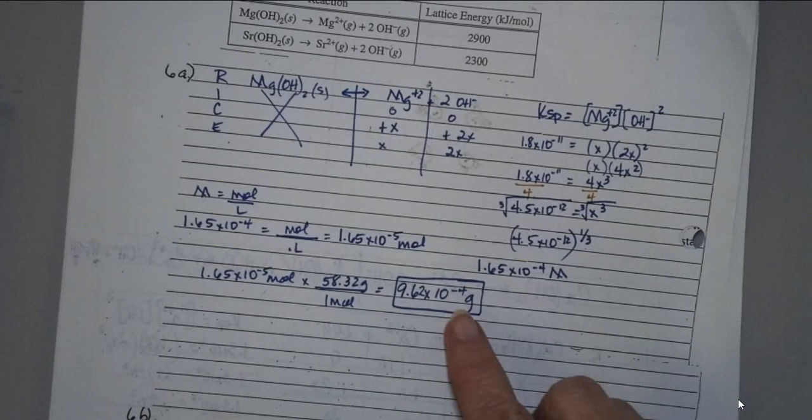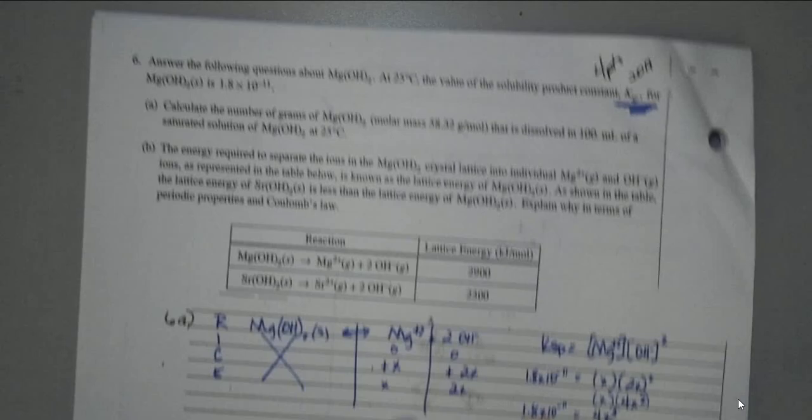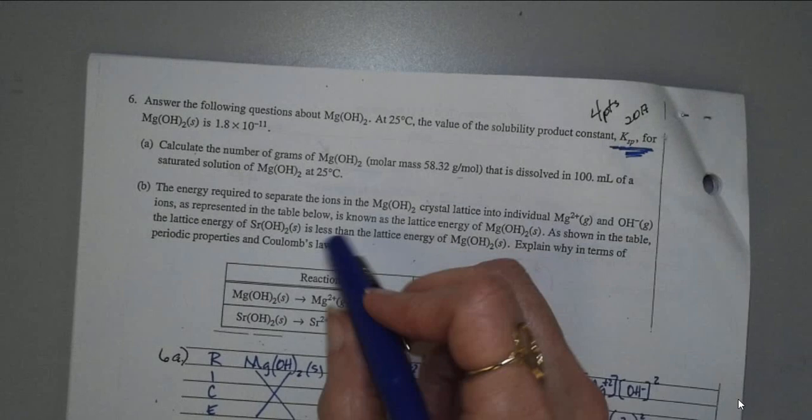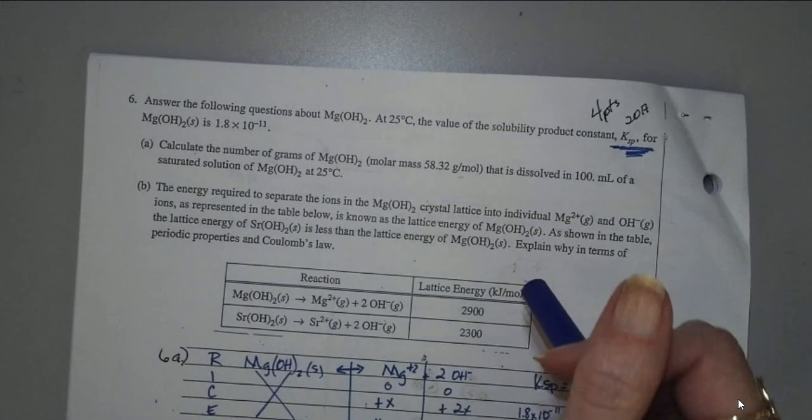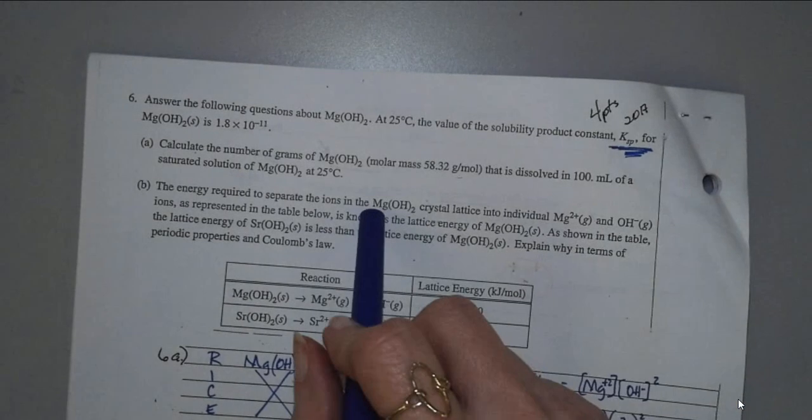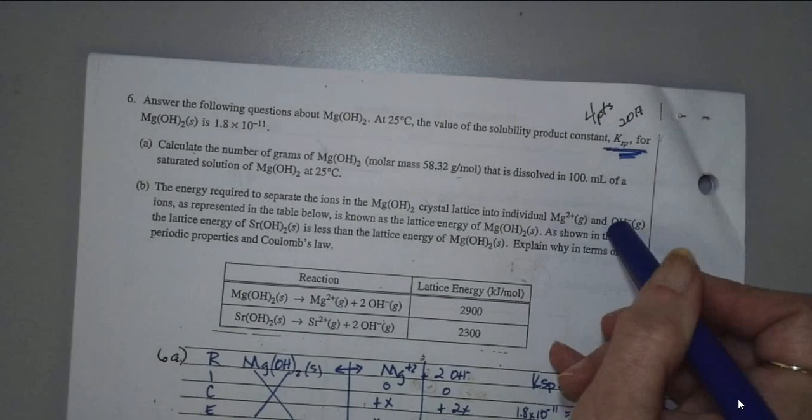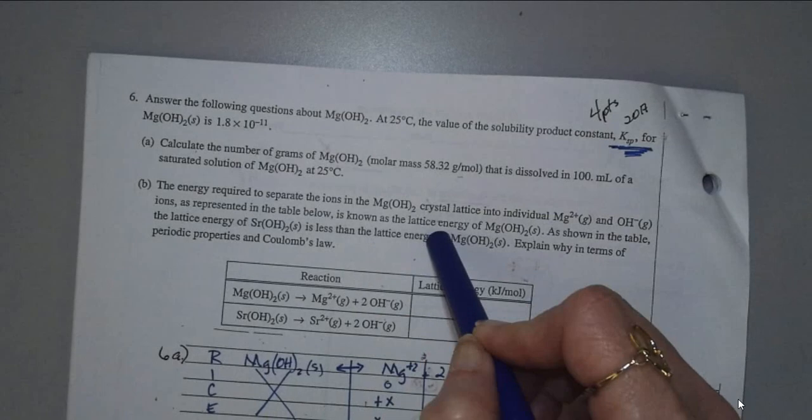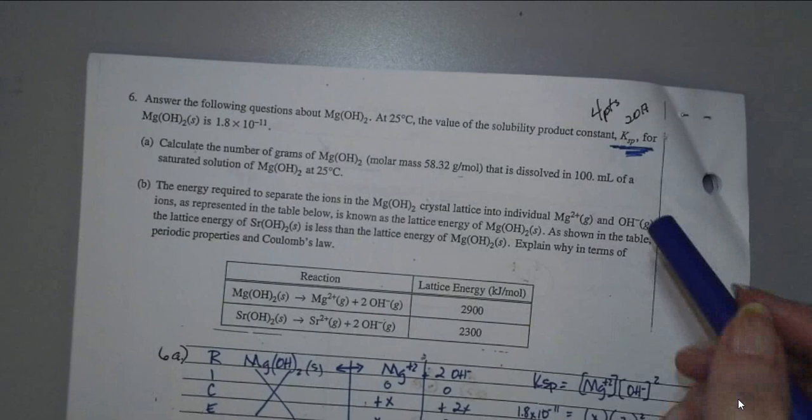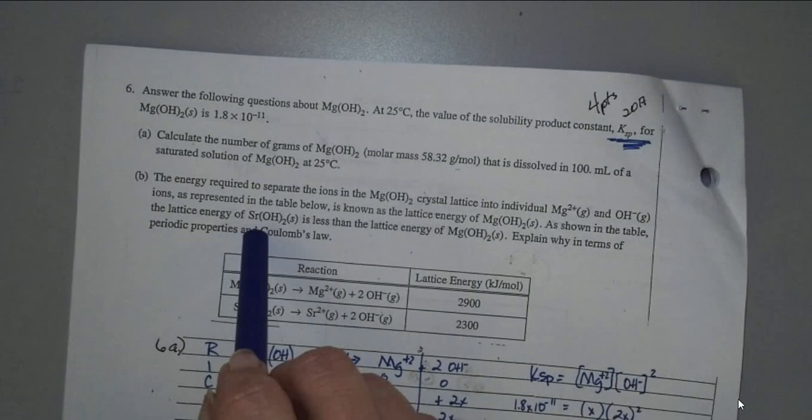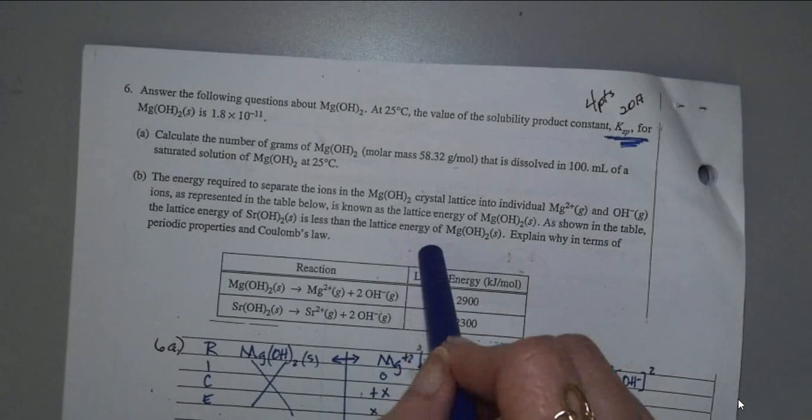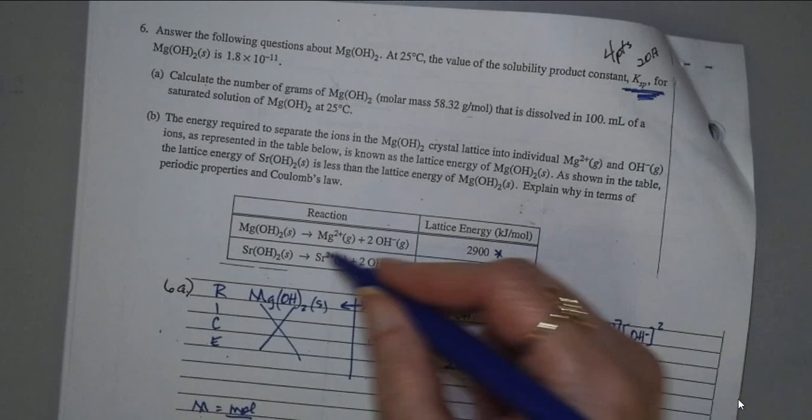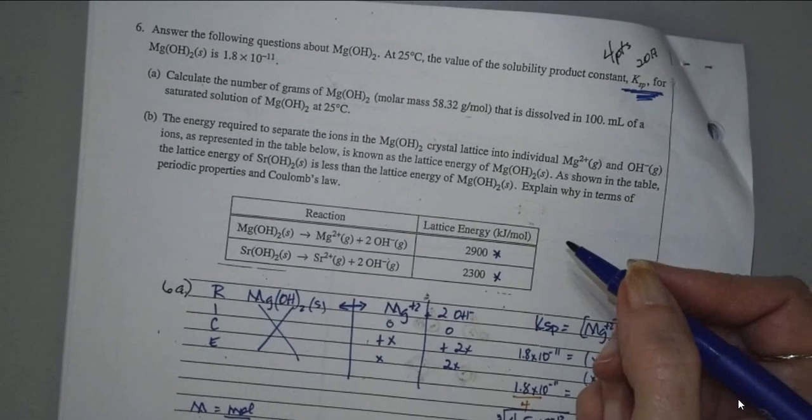On the next part, the energy required, notice it's absolutely nothing to do with solubility now. The energy required to separate the ions in the solution of the magnesium hydroxide crystal lattice into individual magnesium ions and hydroxide ions, as represented in the table below, is known as the lattice energy. So to separate the ions in solution is called the lattice energy. As shown in the table, the lattice energy of strontium hydroxide is less than the lattice energy of magnesium hydroxide. Explain why in terms of periodic properties and Coulomb's law.